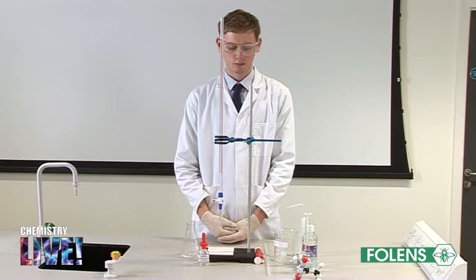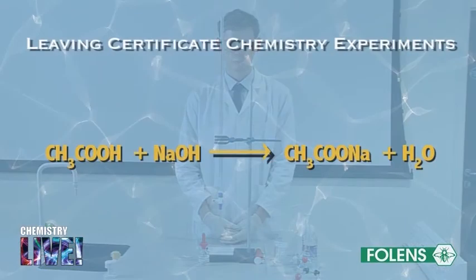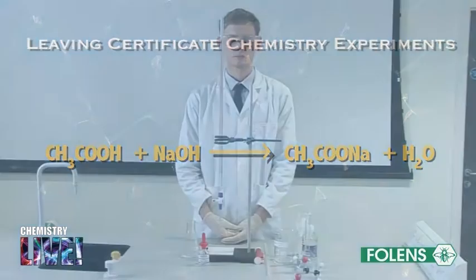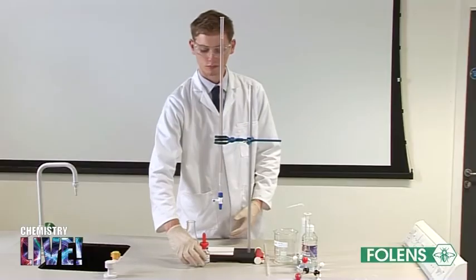The amount of ethanoic acid in vinegar can be determined by titrating the vinegar against a standard sodium hydroxide solution. The equation for the reaction is shown on the screen. We will use phenolphthalein indicator to detect the endpoint in this titration.